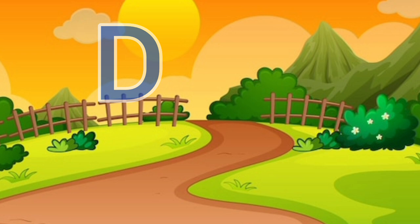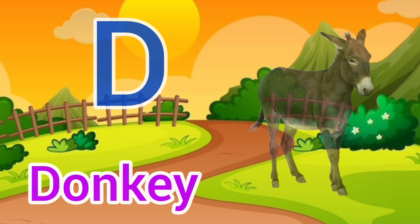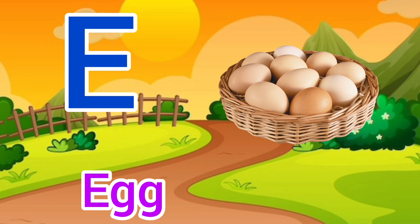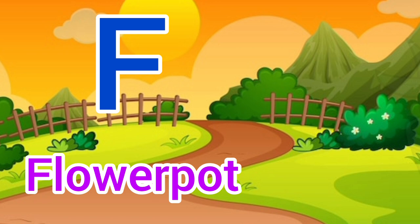D for donkey, donkey means gada. E for egg, egg means anda. F for flower pot, flower pot means gumbla.